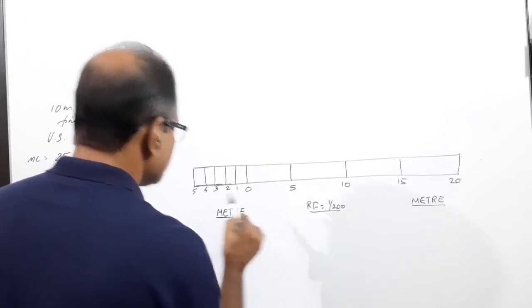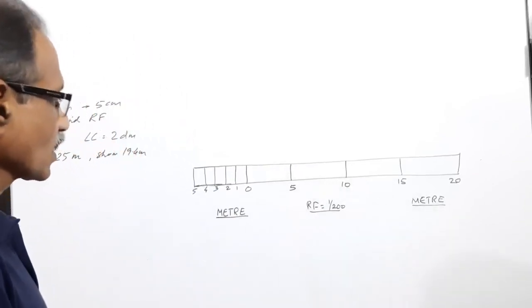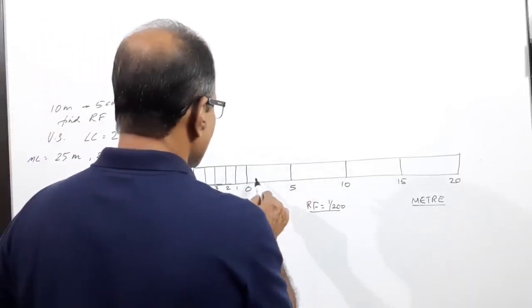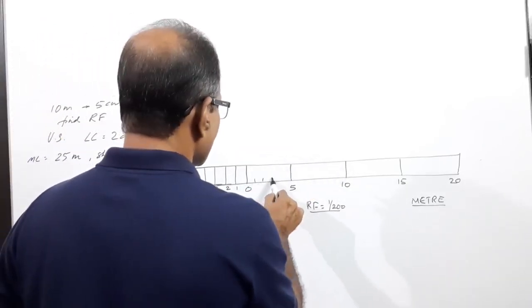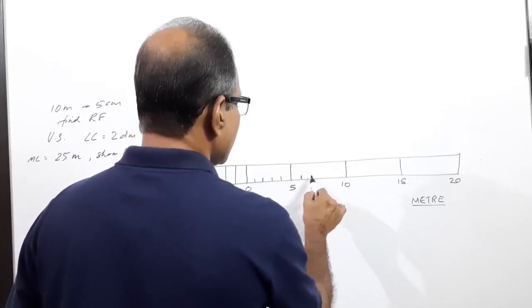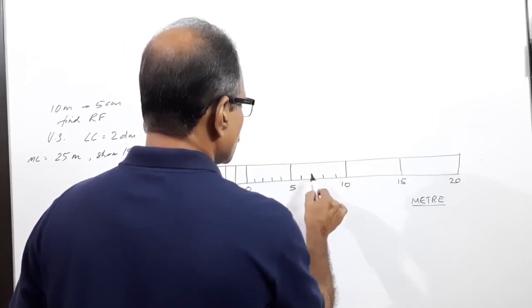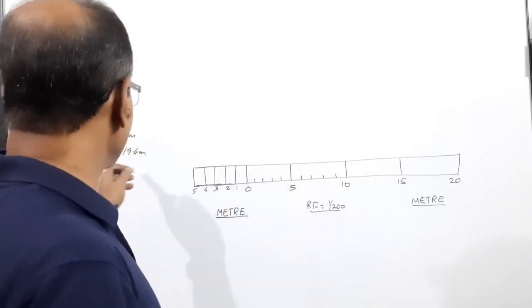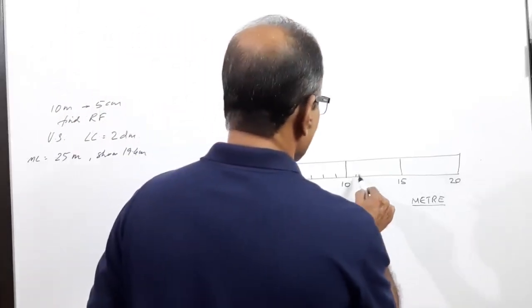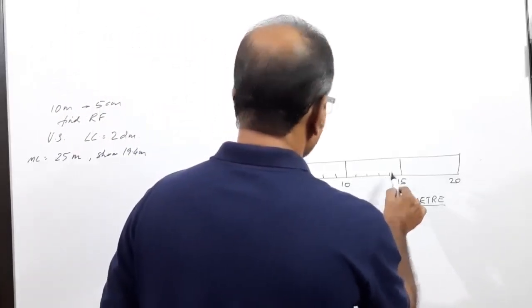Draw like that. These portions also you have to divide and mark divisions. Why is it necessary? It is necessary to show the required distance of 19.4 meters. You are asked to show this, so you need subdivisions here also.